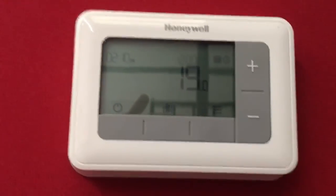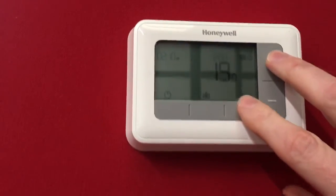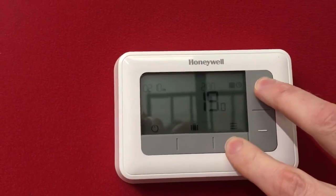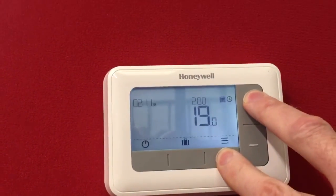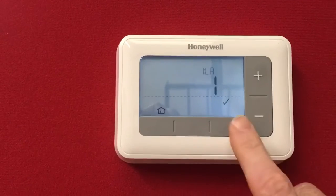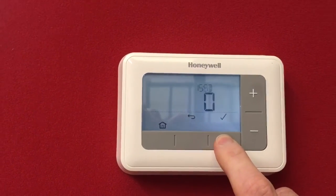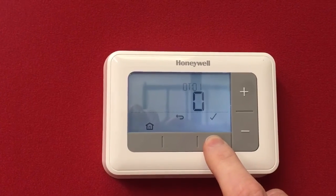So on the T4M, if you press and hold those two buttons together there, you get inside the installation menu. So what you have to do, you have to keep pressing the tick all the way down until you get past setting number 16, and then you come into the open therm controls.